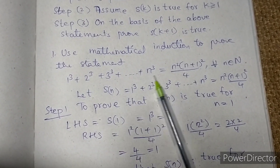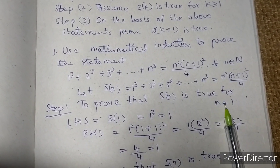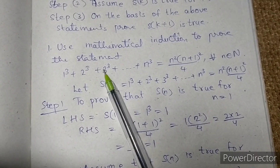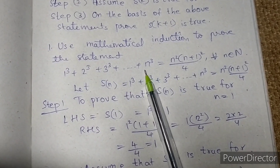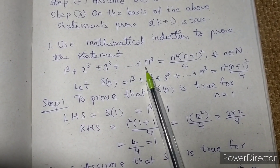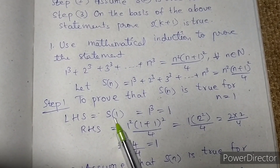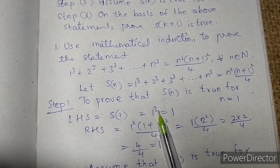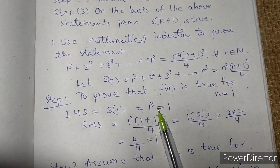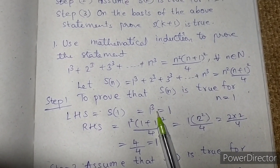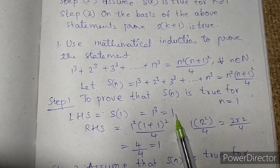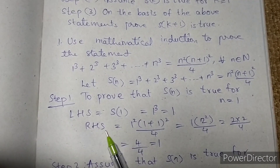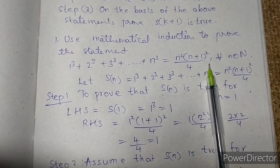Now we have to prove that this statement is true for n = 1. So in place of n we keep 1. If we keep n = 1, we get 1³, which is 1 × 1 × 1 — three times multiplied — which equals 1. Then we check the RHS.